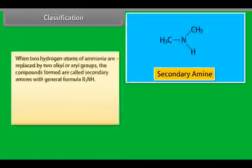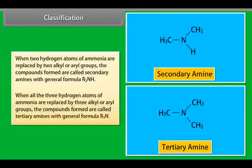When two hydrogen atoms of ammonia are replaced by two alkyl or aryl groups, the compounds formed are called secondary amines with general formula R2-NH. When all the three hydrogen atoms of ammonia are replaced by three alkyl or aryl groups, the compounds formed are called tertiary amines with general formula R3-N.